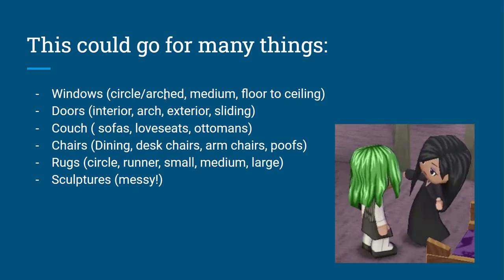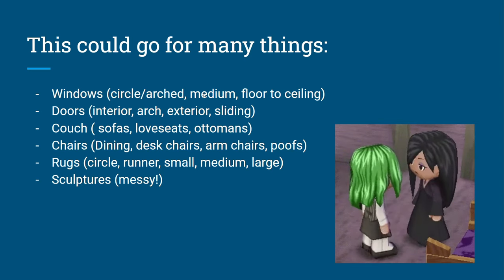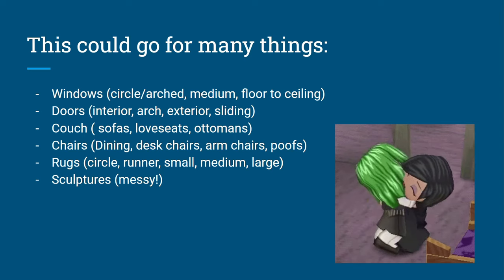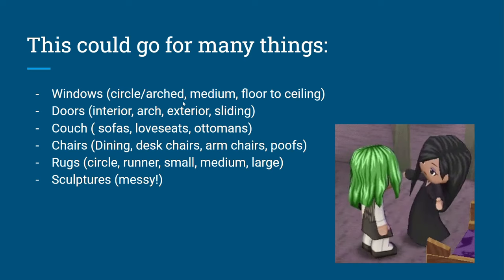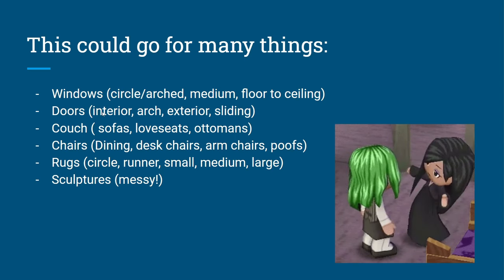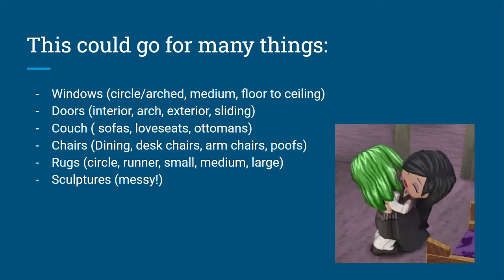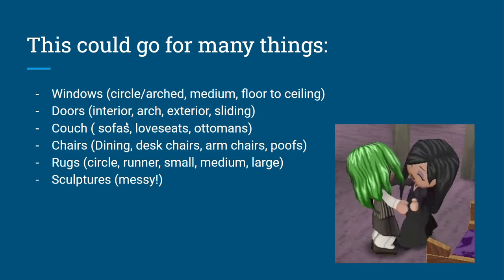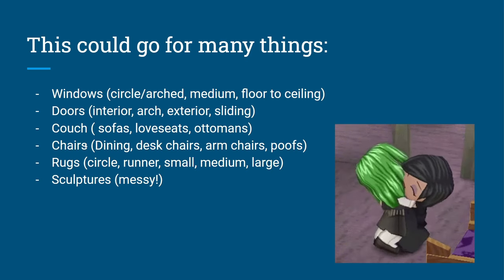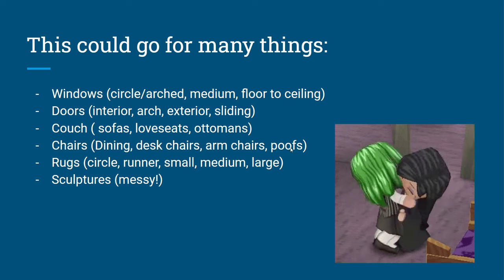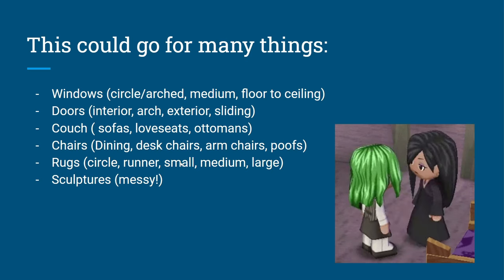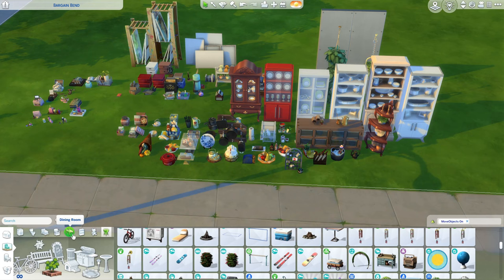For doors I was thinking interior, arch, exterior, and sliding door — I usually use sliding doors as a back door, so it could be sliding door slash back door. For couches: sofas, loveseats, and ottomans. For chairs: dining chairs, armchairs, and booths. For rugs: circle, runner, small, medium, and large. For sculptures — it's just messy.